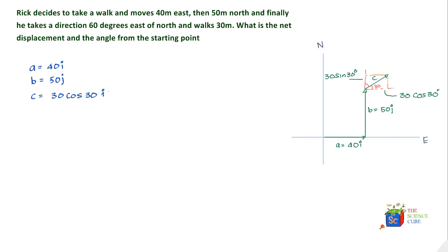Let's put the arrow sign on top of the vectors to make them look like vectors. So vector C would equal 26 I plus 15 J. I've taken the value of cos 30 and sine 30 and multiplied it by 30 to get these values.